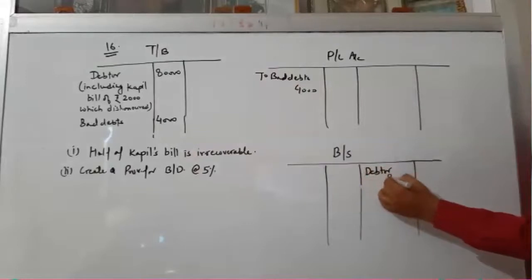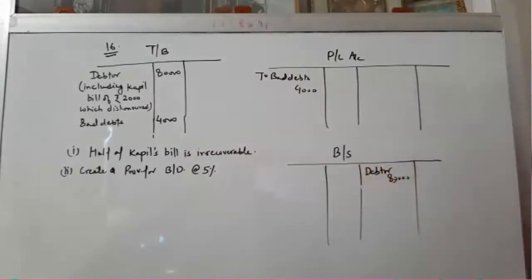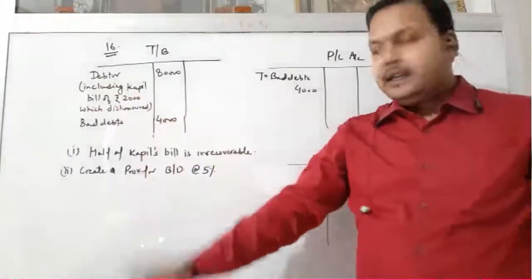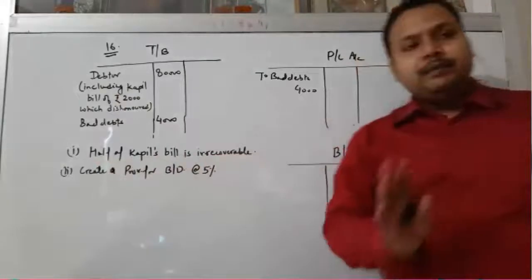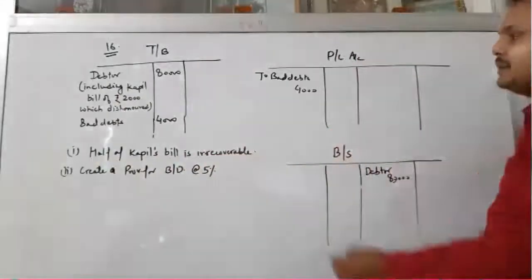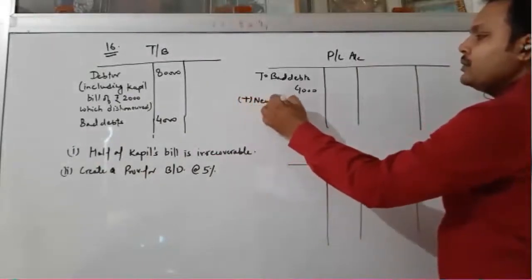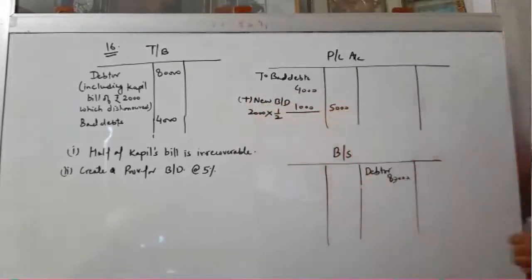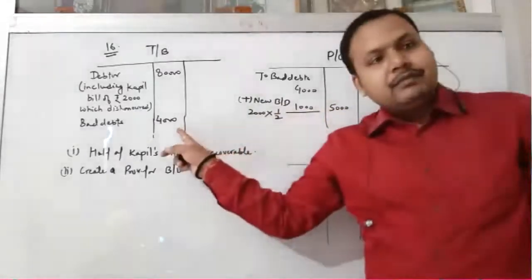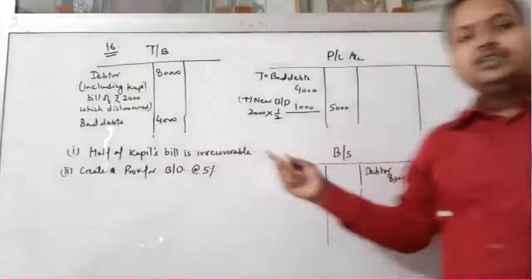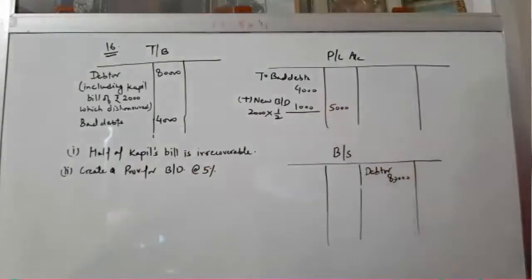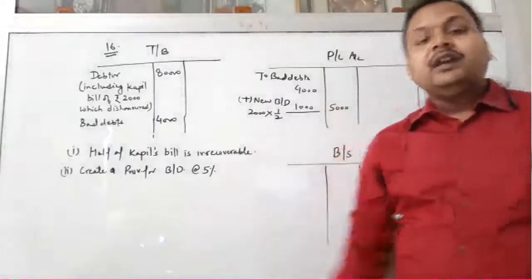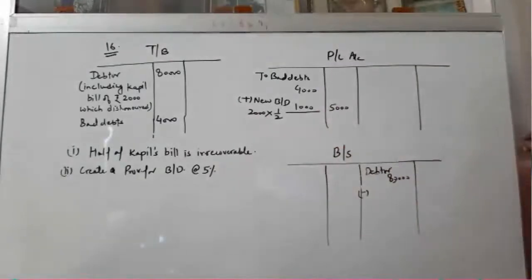The debtors value is ₹80,000, shown on the asset side of the balance sheet. The dishonored bill written in debtors — half of the bill is irrecoverable, meaning half of ₹2,000 is bad debts, so new bad debts are ₹1,000. Total bad debts = ₹4,000 (from trial balance) + ₹1,000 (additional) = ₹5,000. The bad debts given outside the trial balance are deducted from debtors; those inside are already deducted.